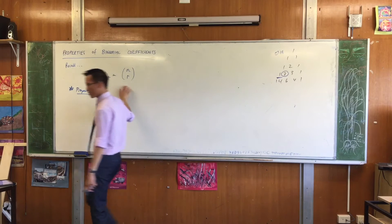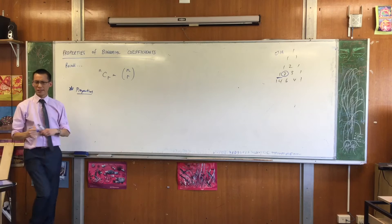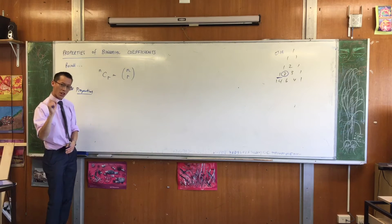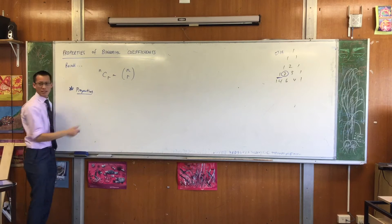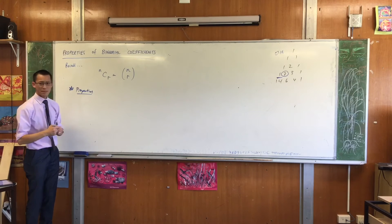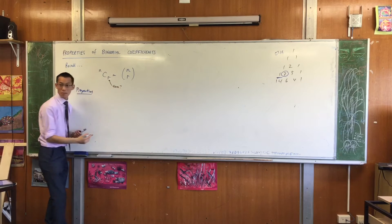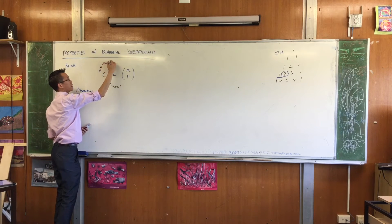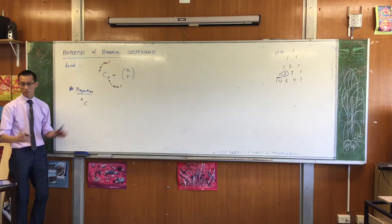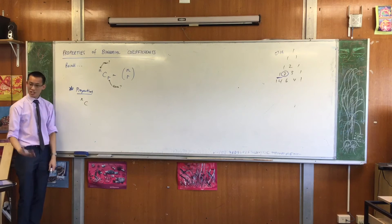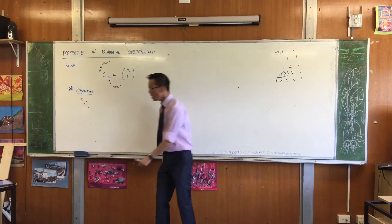So how am I going to state that using this notation? What would I write? How can I talk about, how would I describe the zeroth term in any row? Which of these is the letter that describes the term again? It's the r, isn't it? That's the term. Which term is it? And this guy is the row.